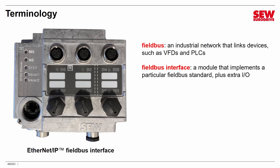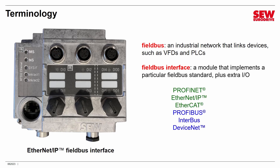Most field bus interfaces also include some extra I.O. connections to expand the capabilities of the Movimod. Currently there are six field bus standards available: PROFINET, Ethernet IP, EtherCAT, PROFIBUS, INTERBUS, and DEVICENET. The ones in green are modern field bus standards based on Ethernet-type networking. The remaining three in blue are classic field bus standards developed in the 1970s or 1980s, based on older networking technologies — legacy field buses, but still common today. SEW EuroDrive supports both the classic and modern Ethernet-based standards.